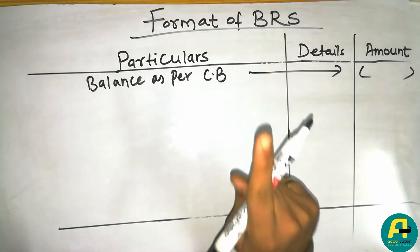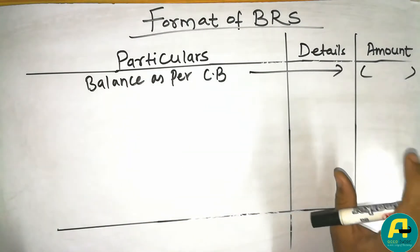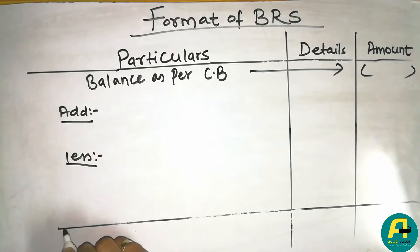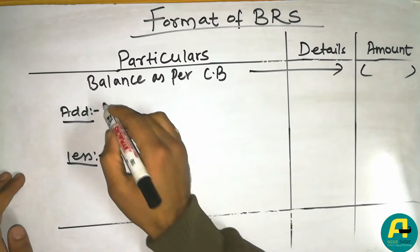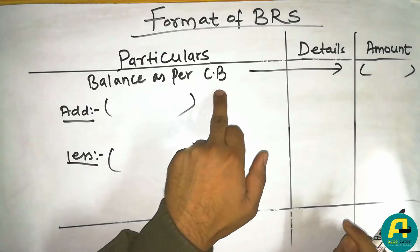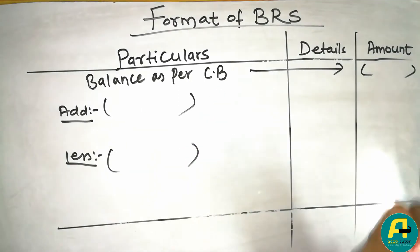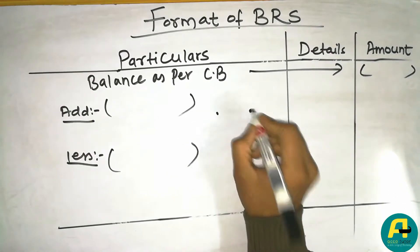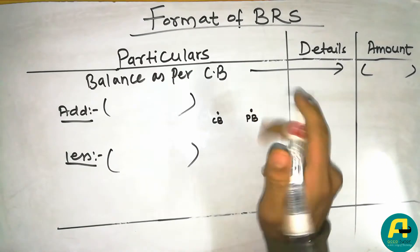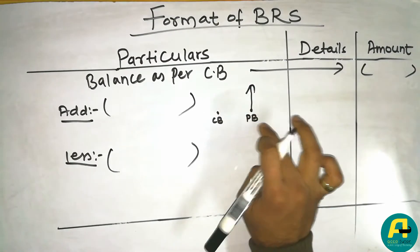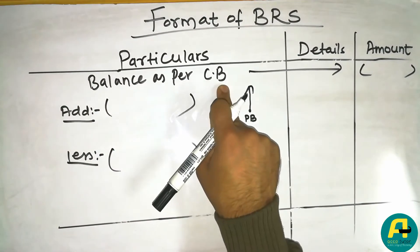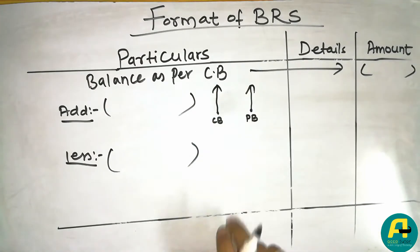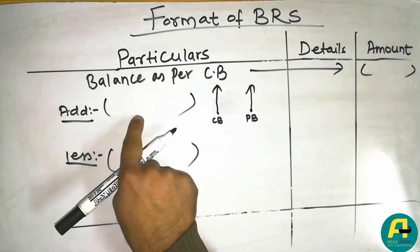In the BRS format, you add and subtract various transactions. The balance as per cash book is available from the cash book, and the pass book balance is what you are trying to arrive at. When the pass book balance is more, you note the conditions under which to add or subtract transactions from the cash book balance to reconcile toward the pass book balance.